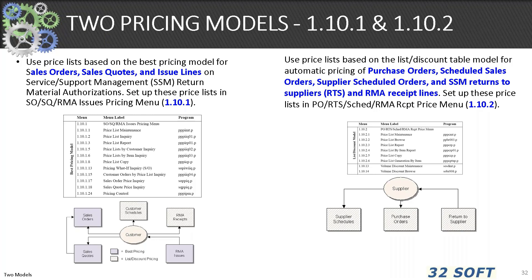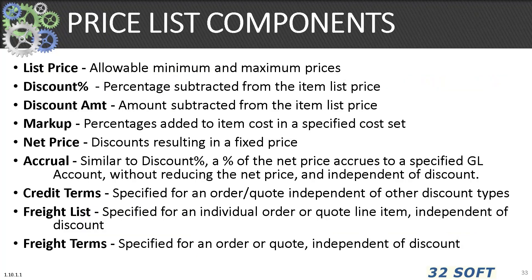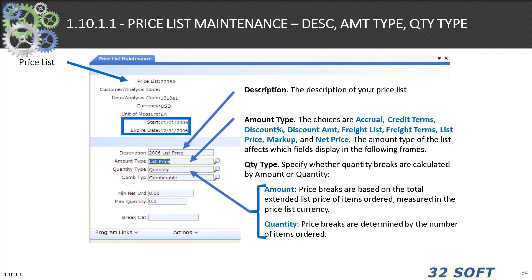A price list is composed of several elements or components: the price list used as the foundation of the pricing logic, discount percent and amounts, markup percents, net prices, accruals (a financial account similar to discount but a financial process over a period of time), credit terms, freight lists, and freight terms. Returning to the lower frame of 1.10.1 price list maintenance: the description of the price list should be very specific according to your schema, along with amount type — accrual, credit terms, discount percentage, discount amount, freight, freight terms, list price markup, and net price — and a quantity type, which is either amount or quantity.